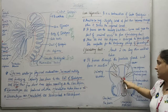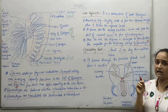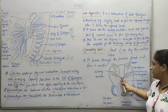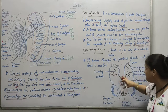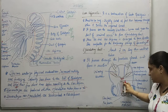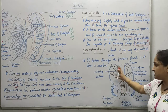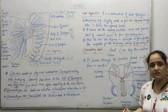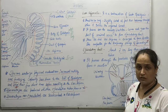The ejaculatory duct is a very small part — merely 2 centimeters long. It is a thin-walled tube that passes through the prostate gland and opens into the urethra. This is the structure of the male reproductive system. A few more things are still remaining, which we are going to continue in our next video. Thank you.